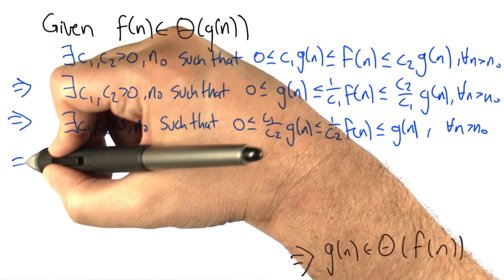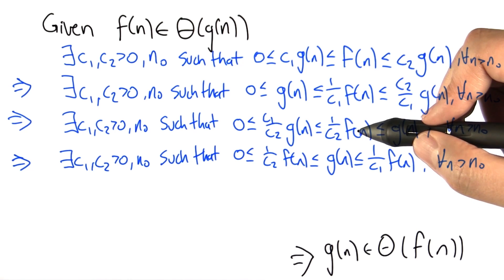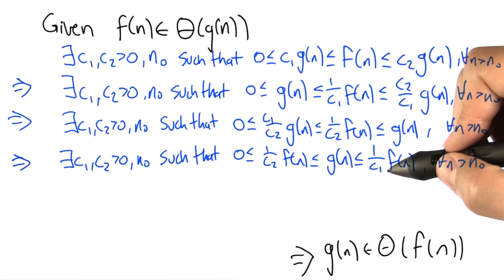So we can combine these two facts to show that g of n is sandwiched between 1 over c2 of f of n and 1 over c1 of f of n.